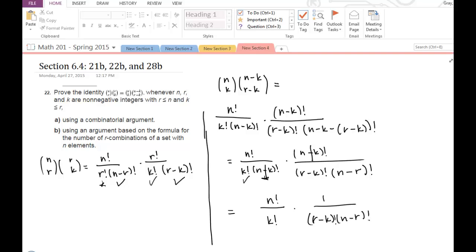So now if I look at my denominator, it looks like the only thing that's missing is that r factorial.